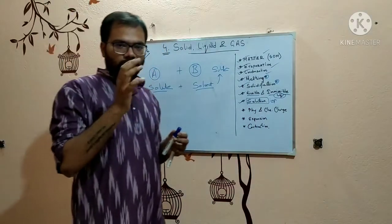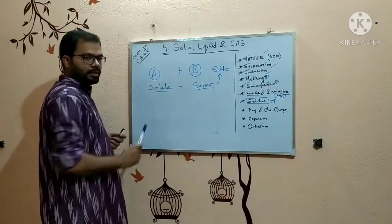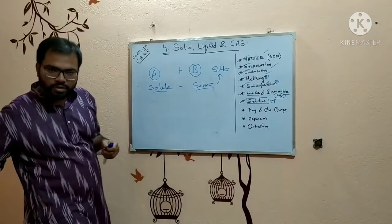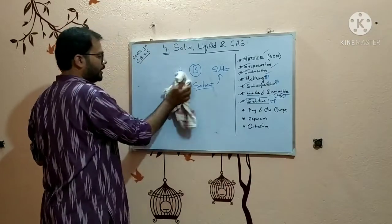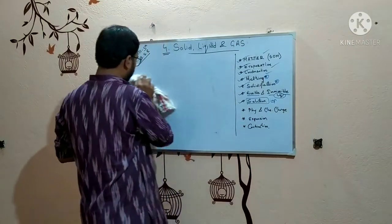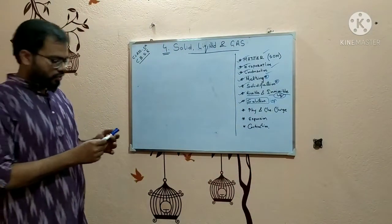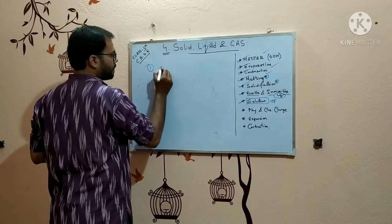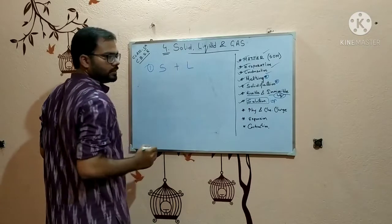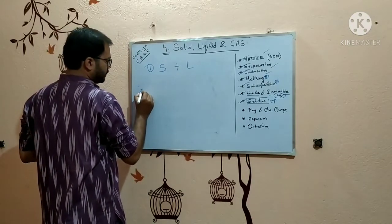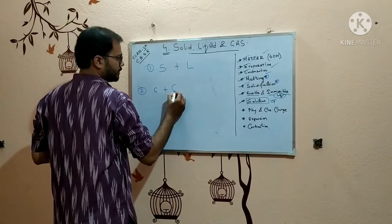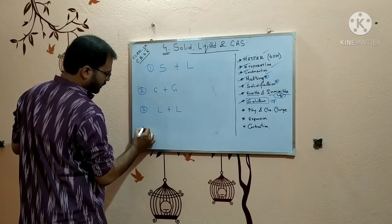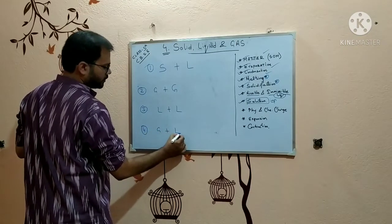So you have two things mixed together evenly — one is known as solute and another is known as solvent. Solute is the one which gets dissolved and solvent is the one in which solute dissolves. This solution is further classified in class 5th into four parts. First is solid plus liquid solution. Second is gas plus gas solution. Third is liquid plus liquid solution. And fourth one is gas plus liquid solution.